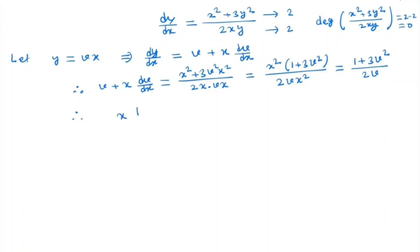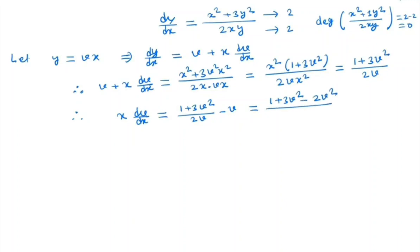So we have x dv/dx equal to (1 plus 3v squared) by 2v minus v. Simplifying this, we get (1 plus v squared) by 2v. So we have a separable ODE and we can separate v and x.